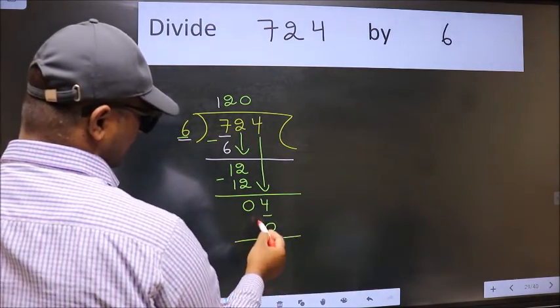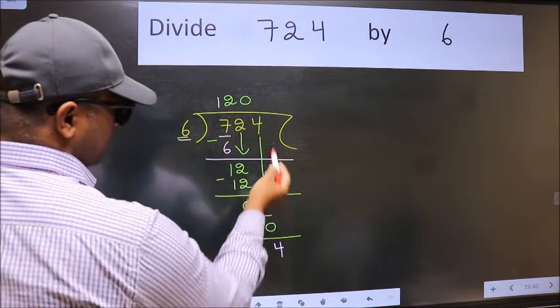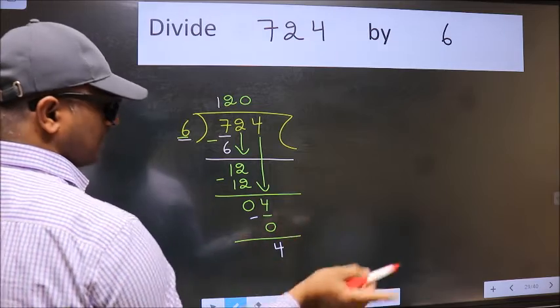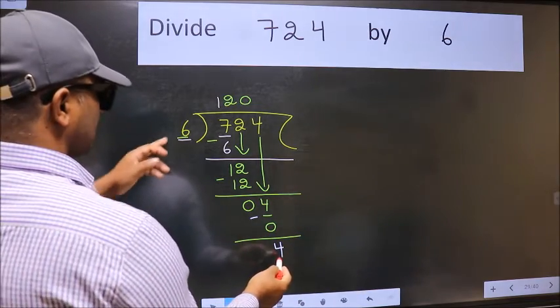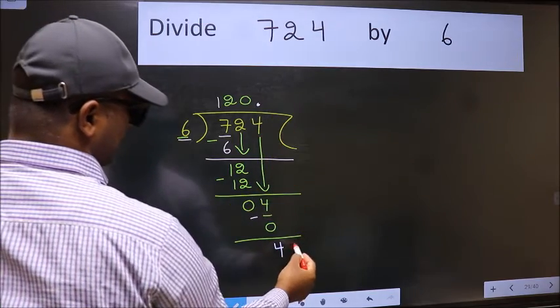Now we subtract and we get 4. Over here, we did not bring any number down, and 4 is smaller than 6. So now we can put the dot and take 0.